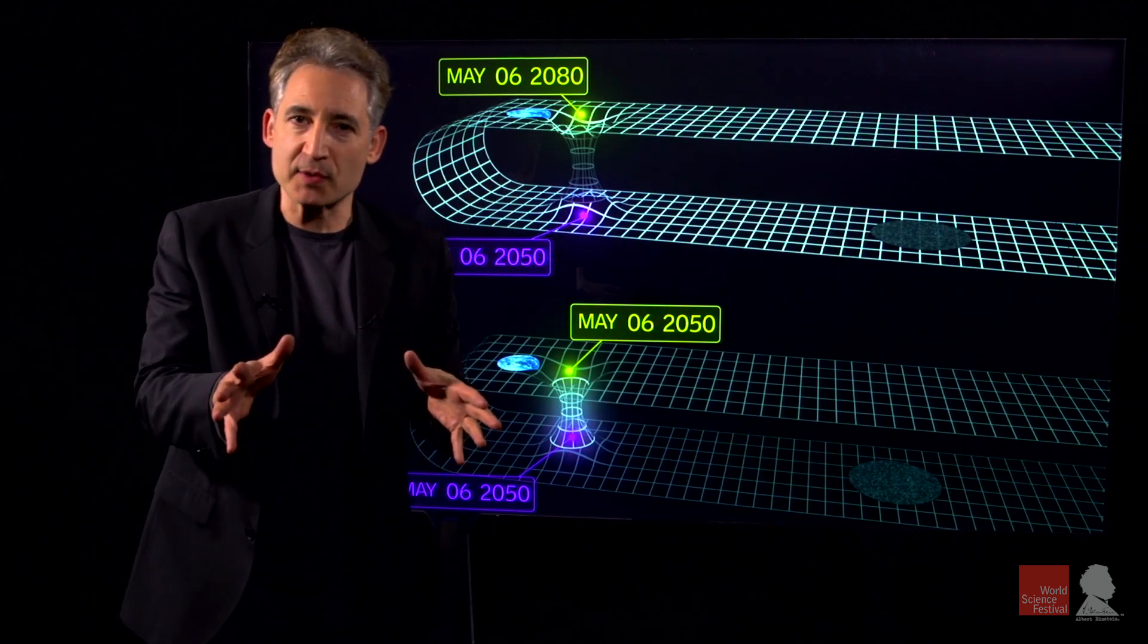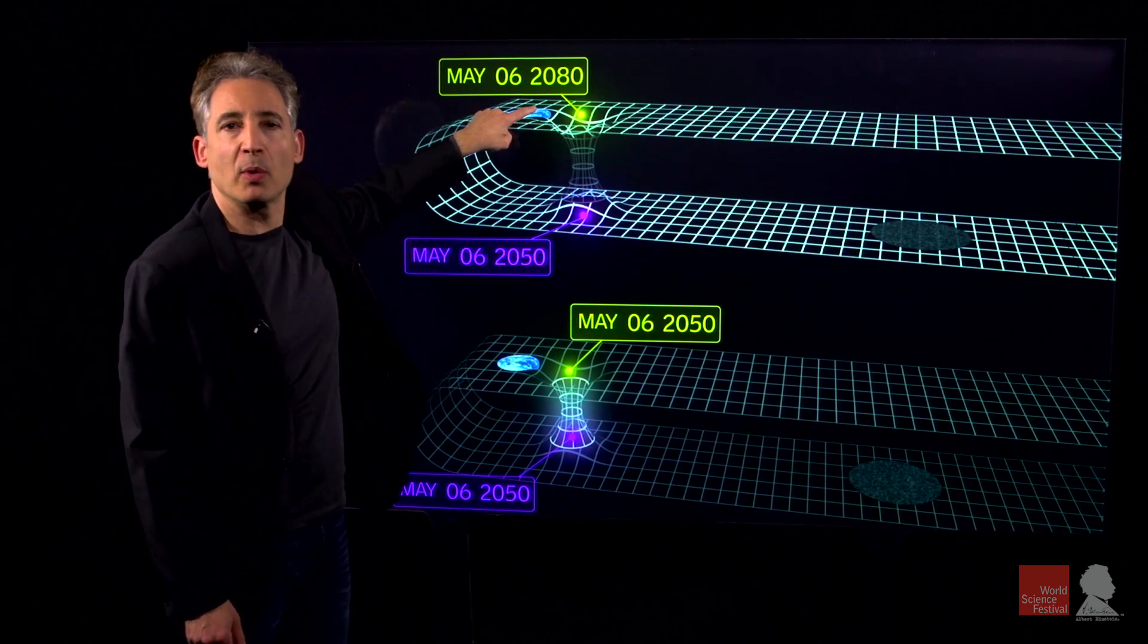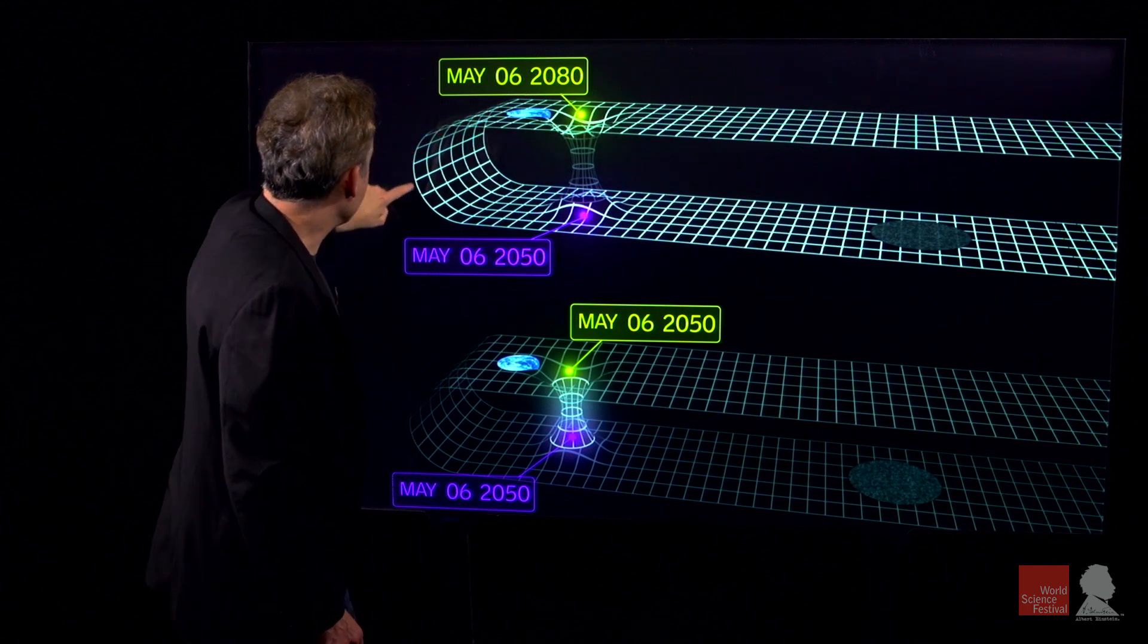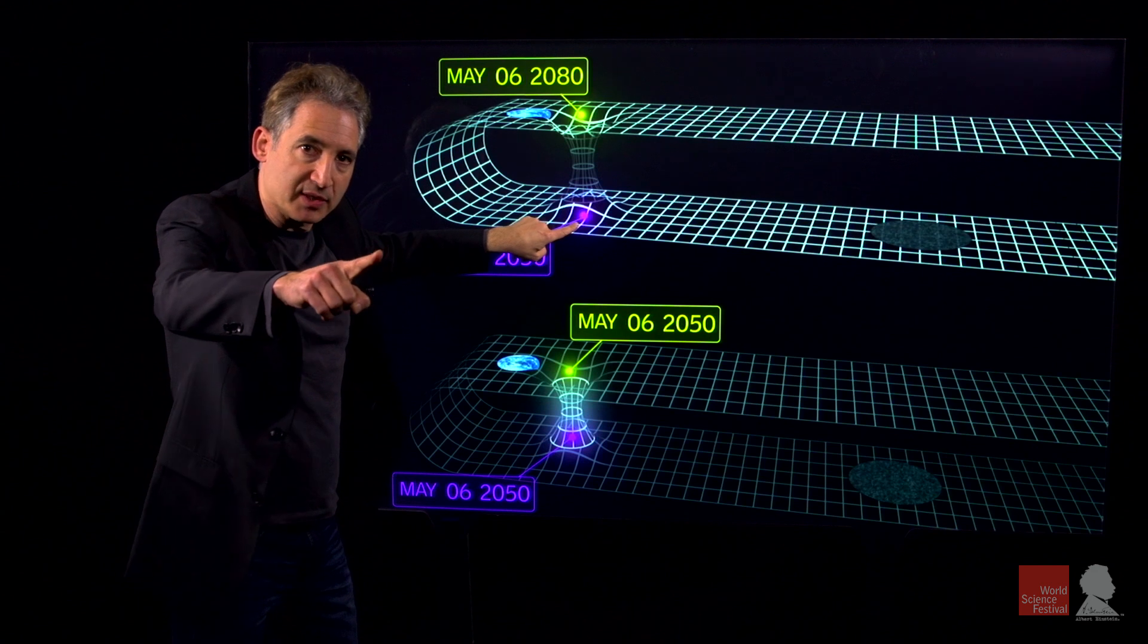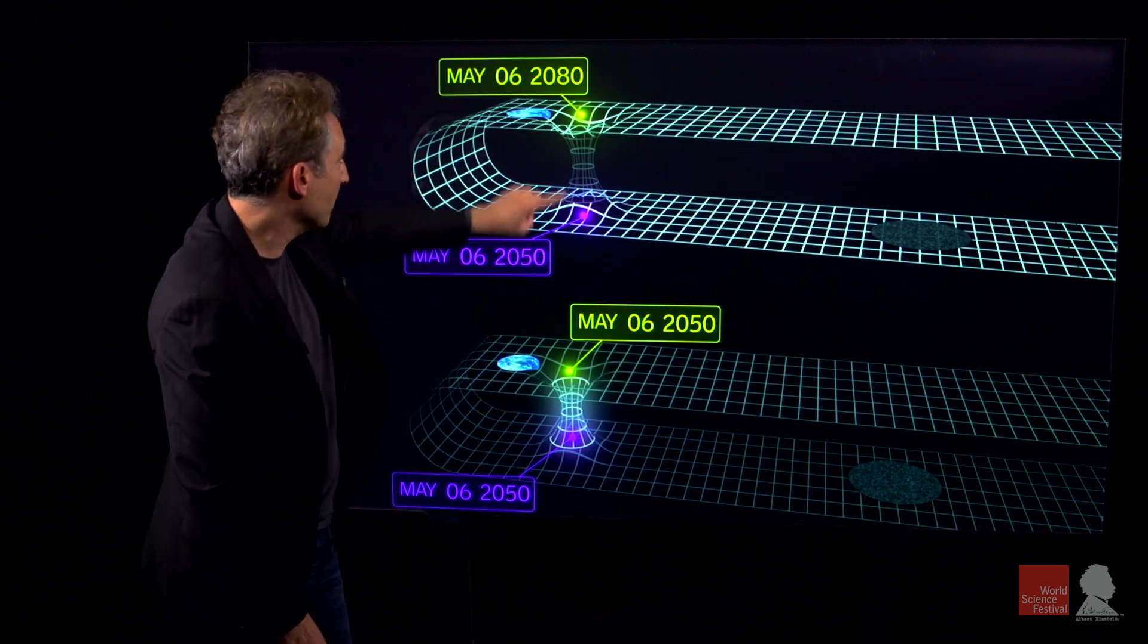And that's where the power comes from. Because imagine we started Earth at May 2080 and we go on a journey from one wormhole opening to the other and now we want to go through the wormhole itself, which means we need to invoke this picture, the relevant one for time going through the wormhole.